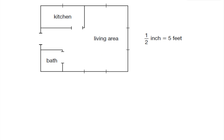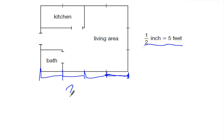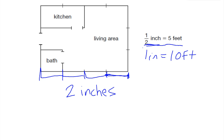We often see this with drawings. Here it says that 1½ inches equals 5 feet, and each of these little tick marks is 1½ inches. So the length of this whole living area is 2 inches. From my scale, I know that 1½ inches is 5 feet, so a full inch is going to equal 10 feet. So the length of this room is going to be 20 feet.